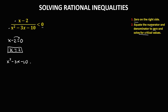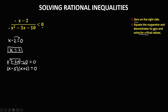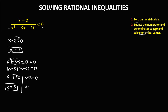For the denominator, x squared minus 3x minus 10 equals zero. Since this is a quadratic equation, we need to find the factors. We have (x)(x), and since the constant is negative 10 with factors 5 and 2, and the middle term is negative 3, the bigger number must be negative: so (x minus 5)(x plus 2). Setting each factor to zero gives x equals positive 5 and x equals negative 2.